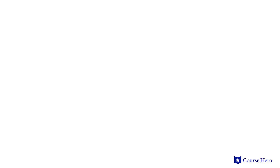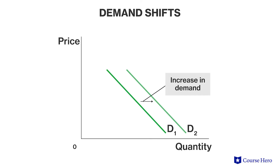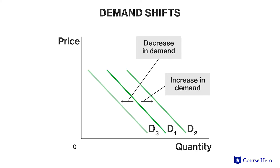Above a potential consumer's maximum price point, the consumer is no longer in the market for that good or service. If prices fall, that consumer will enter the market and consumer surplus will increase. But if prices increase, the consumer surplus will likely shrink.